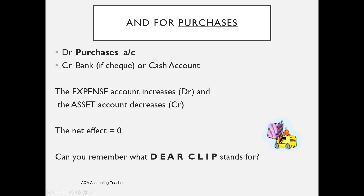If you can still remember what DECLIP stands for: drawings, expenses, assets, and trade receivables on the debit side; and capital, liabilities, income, and trade payables on the credit side. So the expense account is on the debit side — increasing the expense. If we're paying for something, we're reducing the asset. The debit and the credit both happen within the DIA framework.